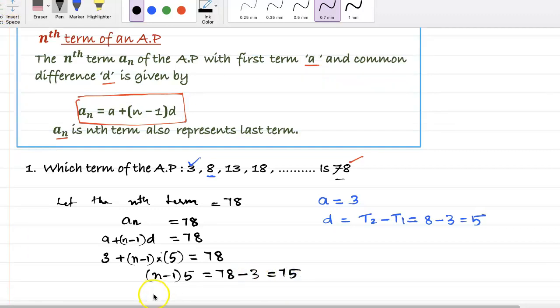Therefore (n minus 1) equals 75 divided by 5, so it gives 15. Therefore n equals 15 plus 1, which is 16. So it means 78 is the 16th term.